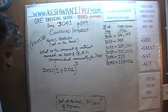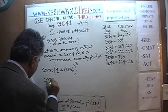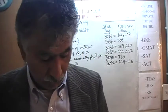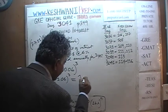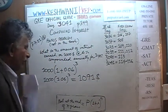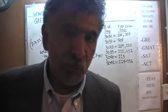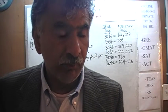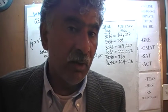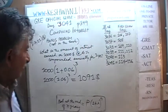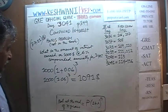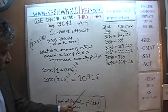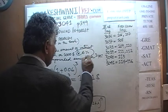We just have to work it out: 1,000 times 1.06 raised to 3. You're going to need a calculator — don't try to do it by hand, it will take too long. If you do it with a calculator, you'll find that at the end of 3 years we'll have $1,191 in the account. Simple interest of 6% for 3 years would be 18%, and 18% of $1,000 is $180.